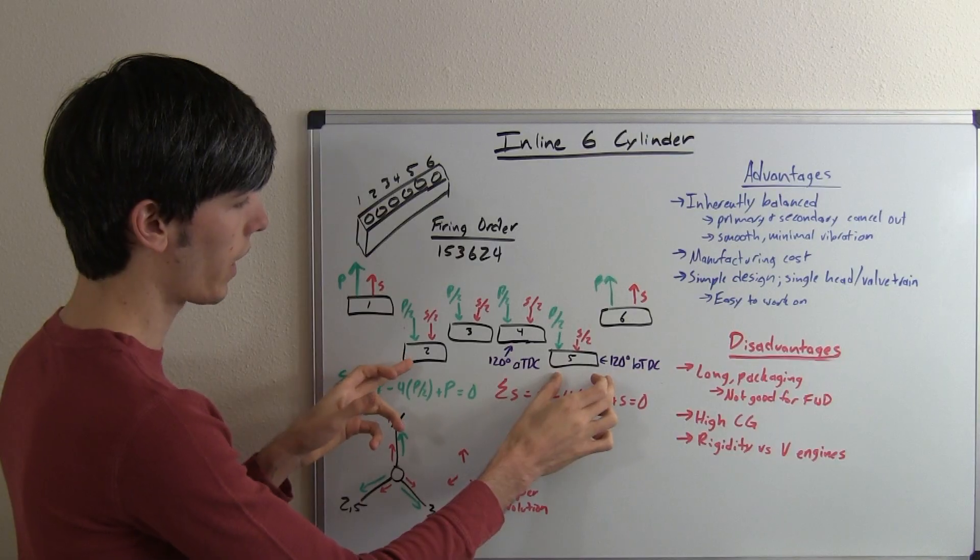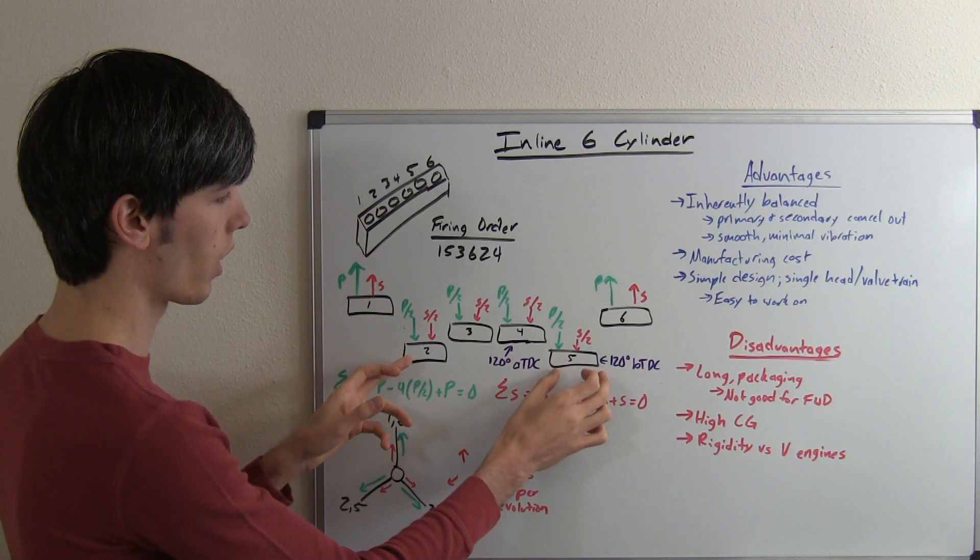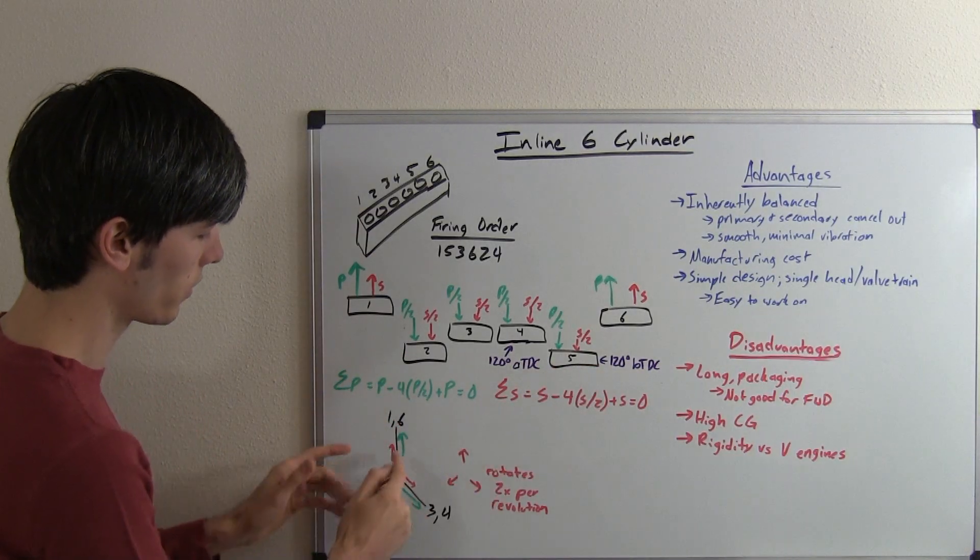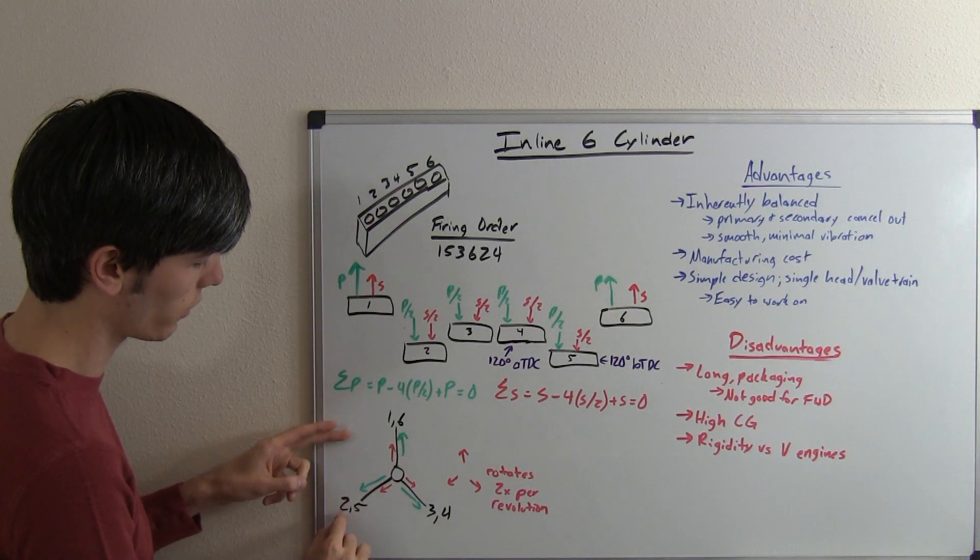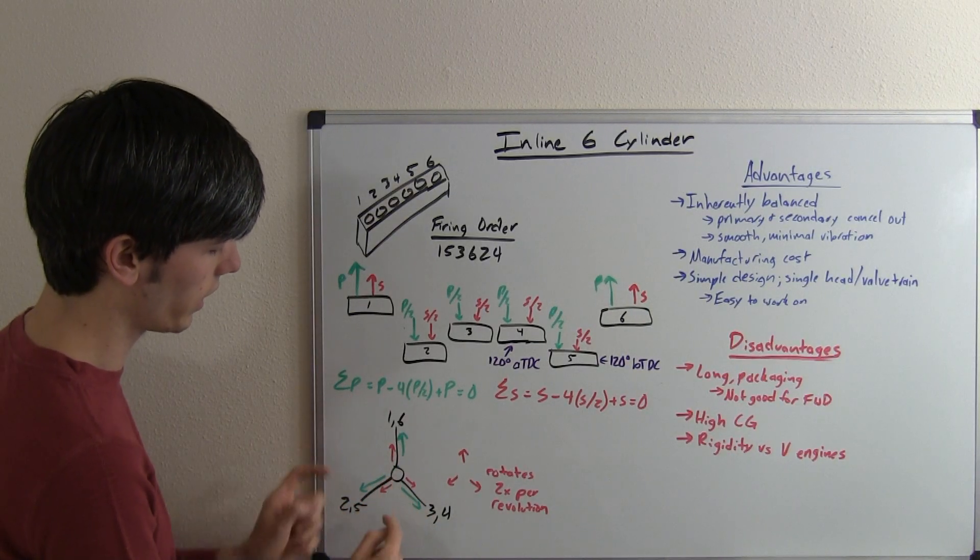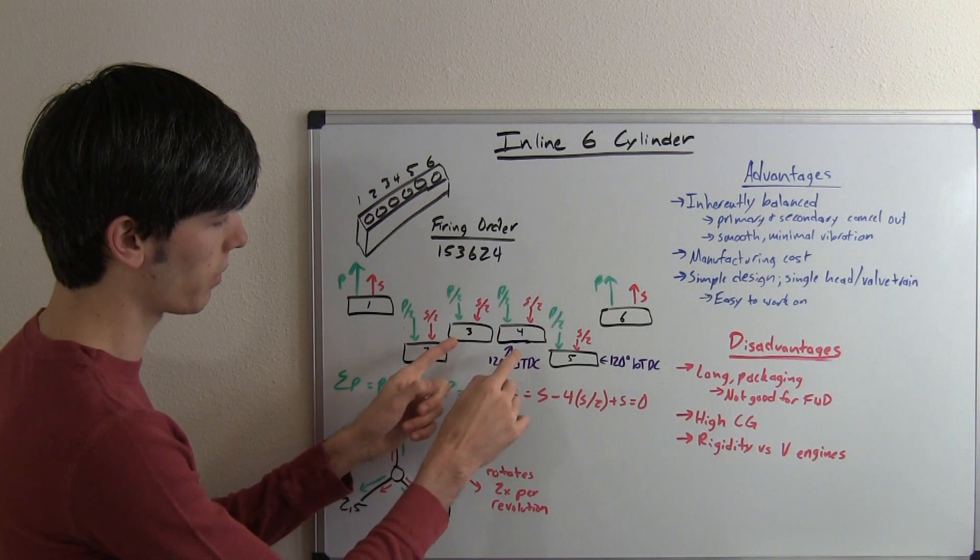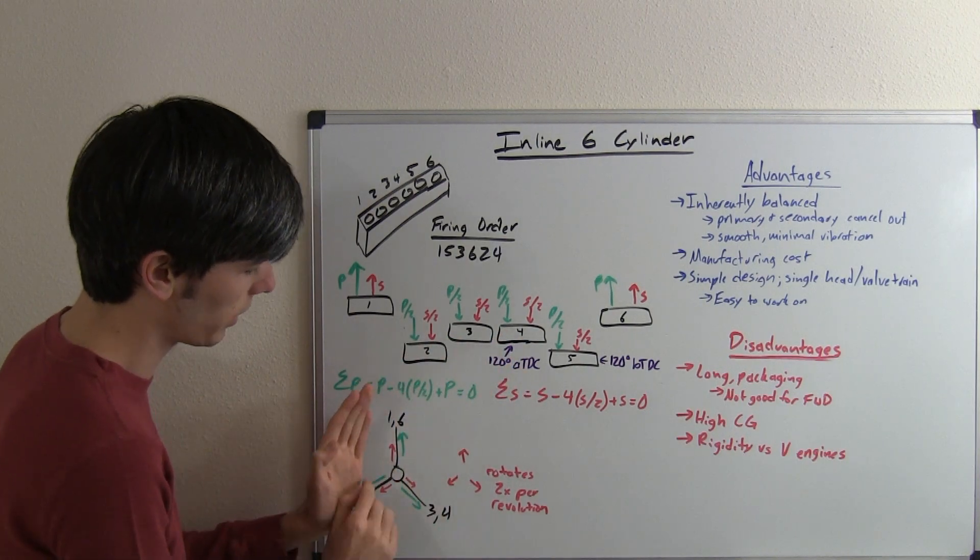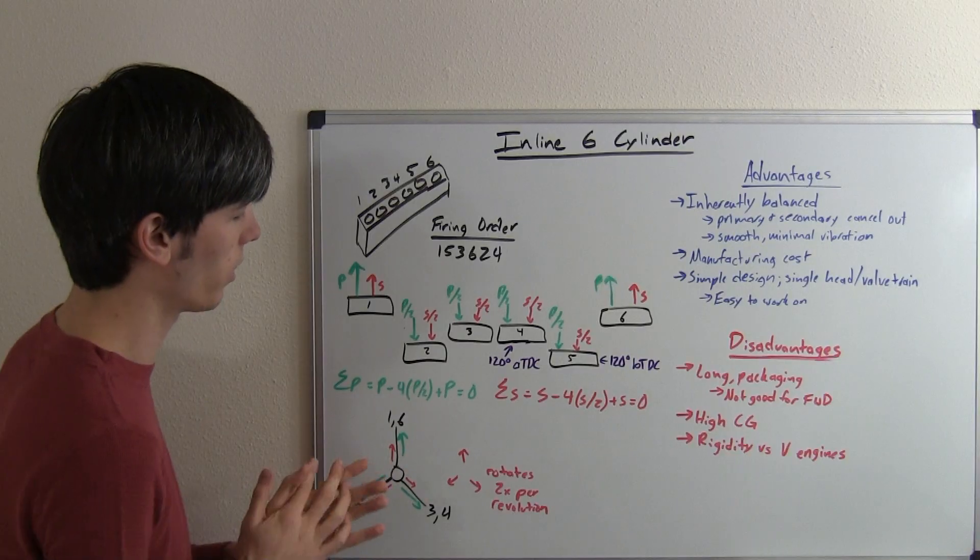But these are going to be two and five are going to be 120 degrees before top dead center. So if you're looking at it kind of at the crankshaft, you're going to have two and five here. They're about to rotate up, and then three and four are going to be 120 degrees after top dead center. So they're going to be over here about to rotate around.